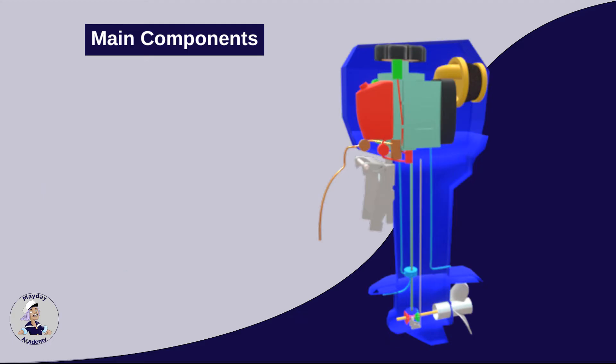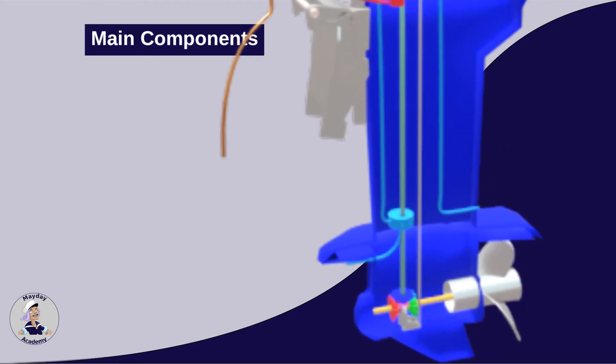The drivetrain in an outboard engine is essentially the system that transmits power from the engine to the propeller, enabling the boat to move through water. It consists of several key components, each playing a crucial role in the smooth operation of the boat. The drive shaft is a long shaft that connects the engine to the gearbox and the propeller. Think of it as a long stick that transmits the engine's power all the way down to the propeller.